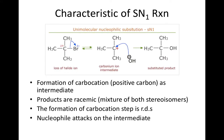In the SN1 reaction, the leaving group leaves and a carbocation is formed. This step is the rate-determining step, and only one substituent controls this step. A stable carbocation compound will prefer this reaction. The nucleophile later replaces the leaving group by attacking the carbocation. Since the carbocation is planar, two possible products are formed — a racemic mixture.